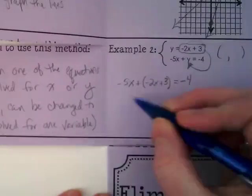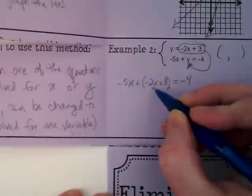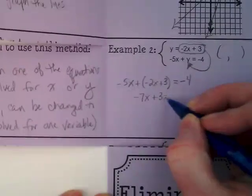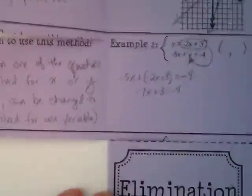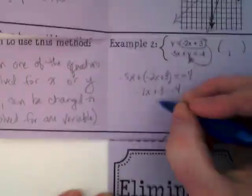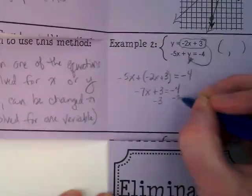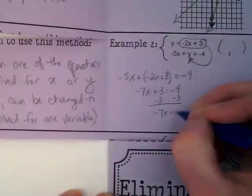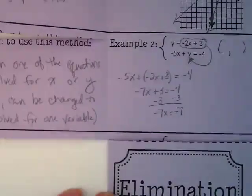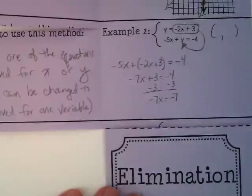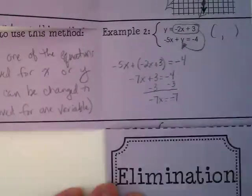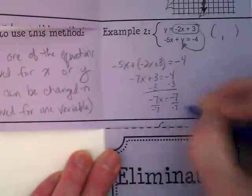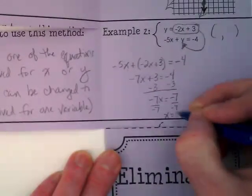So now we're going to simplify and we have negative 5x and negative 2x which is going to become negative 7x plus 3 equals negative 4. And subtract 3 from both sides, and I get negative 7x is equal to negative 7. I'm going to divide by negative 7, and x is equal to 1.